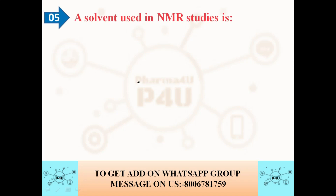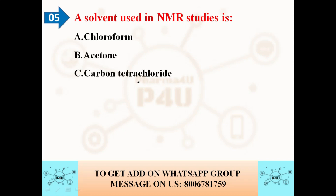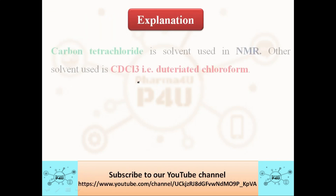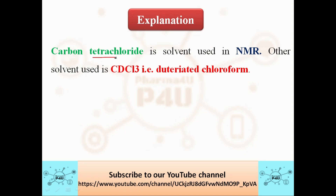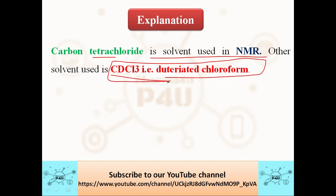The next question is: a solvent used in NMR studies is — option A: chloroform; option B: acetone; option C: carbon tetrachloride; option D: methanol. The correct answer is carbon tetrachloride (CCl4), which is a solvent used in NMR. Another solvent also used is CDCl3, deuterated chloroform. NMR stands for nuclear magnetic resonance.